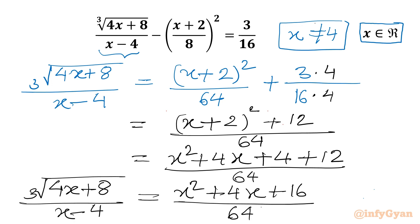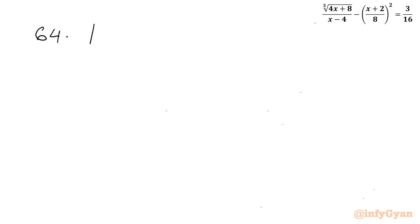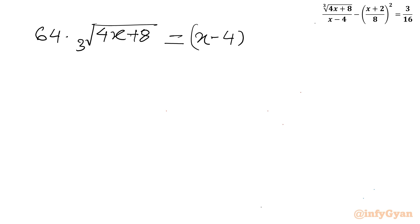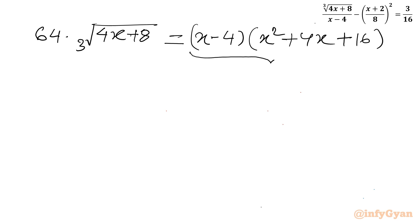Let's cross multiply now. I will write: 64 times cube root of (4x + 8) equals (x minus 4) times (x² + 4x + 16). On the right side we have the identity (a minus b)(a² + ab + b²) = a³ minus b³, so I can write x³ minus 4³, which is x³ minus 64.